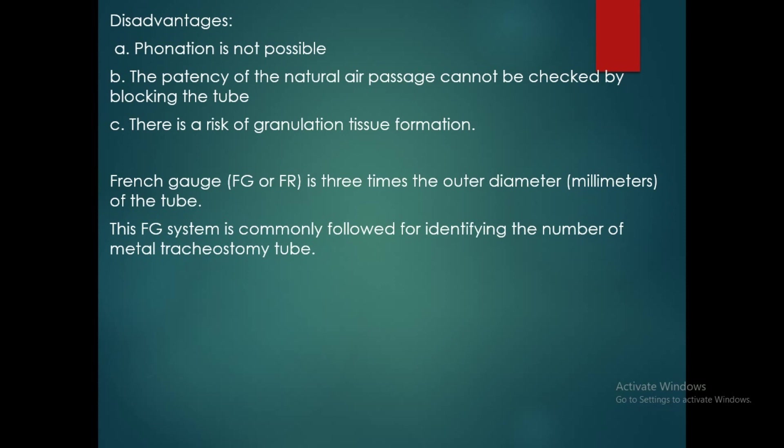Disadvantages of the Jackson tracheostomy tube: phonation is not possible, the patency of the natural air passage cannot be checked by blocking the tube, and there is a risk of granulation tissue formation.